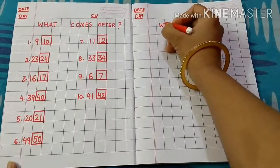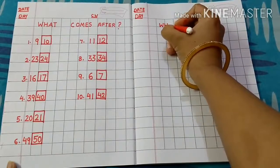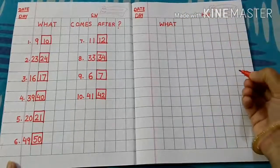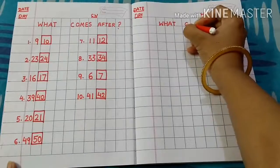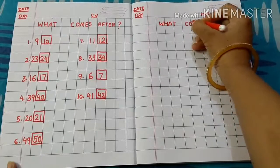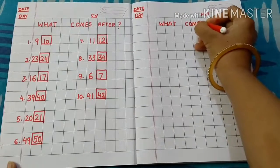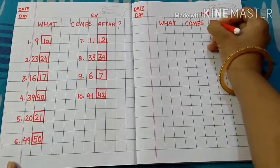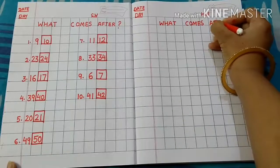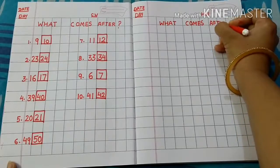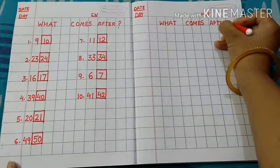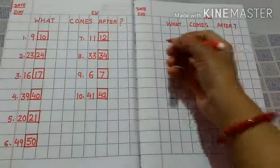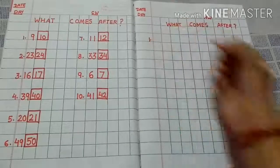W-H-A-T, What, C-O-M-E-S, Comes, A-F-T-E-R — 'What Comes After.' Now leave one line and write the first number.